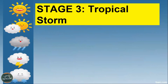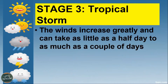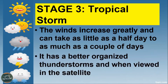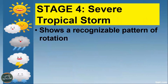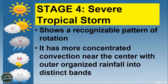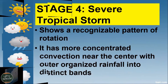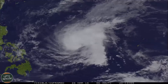Stage three is called a tropical storm. The winds increase greatly and it can take as little as half a day to a couple of days to develop — it shows better organized thunderstorms when viewed in satellite. Stage four is a severe tropical storm, which shows a recognizable pattern of rotation with more concentrated convection near the center and outer organized rainfall into distinct bands.